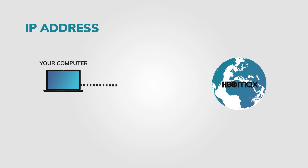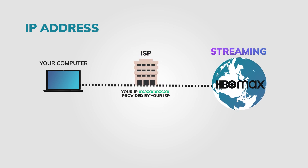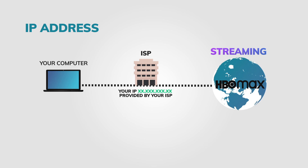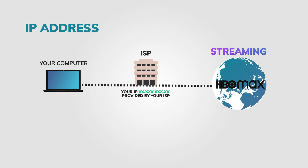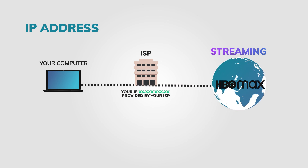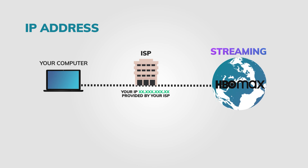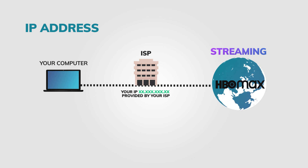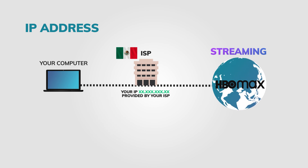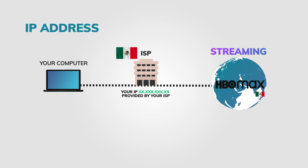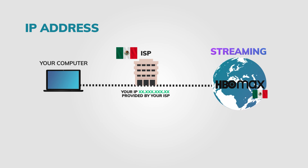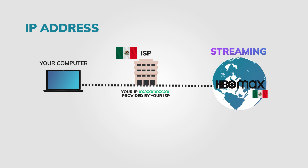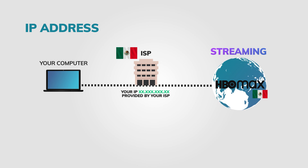HBO Max knows exactly where you are. How? Through your IP address. Your IP address is basically an identifier that every computer gets. It tells every website you connect to where you are, because every country has their own set of IP addresses. For example, I'm in Mexico, so I'll only get access to the Mexico-specific content available on HBO Max. What I need to do is trick HBO Max into thinking that I have an American IP address. And that's where a VPN comes in.